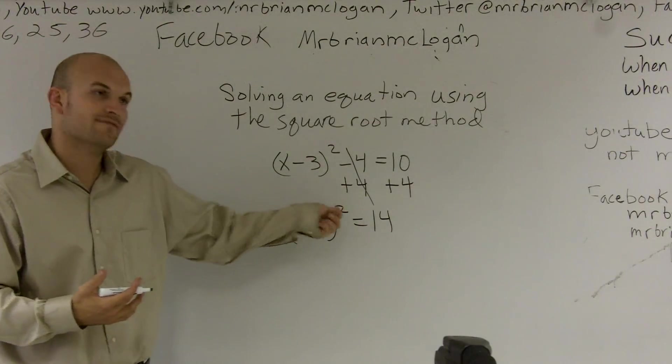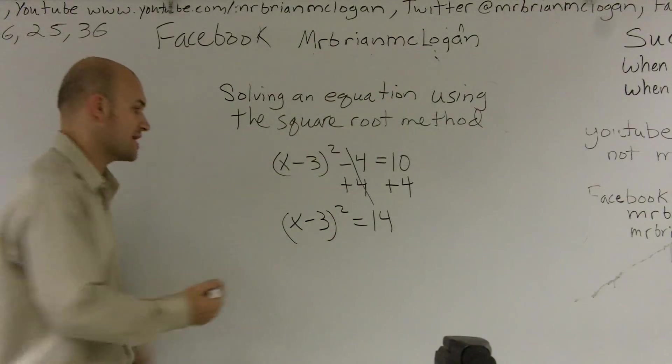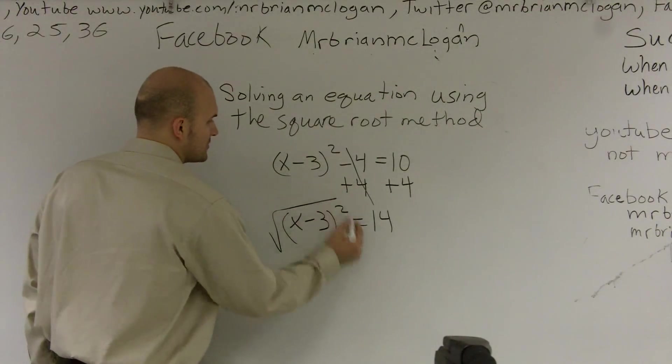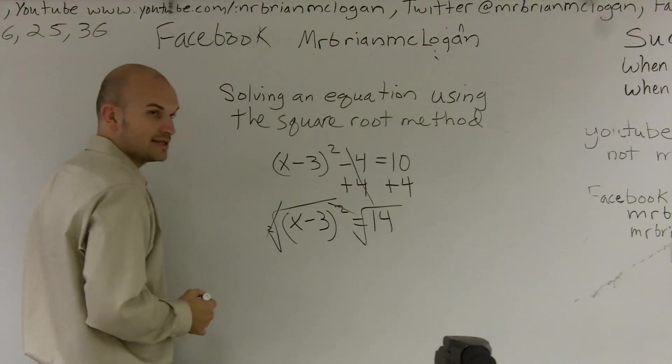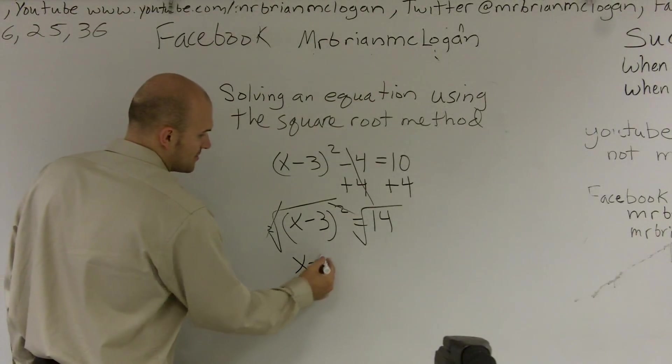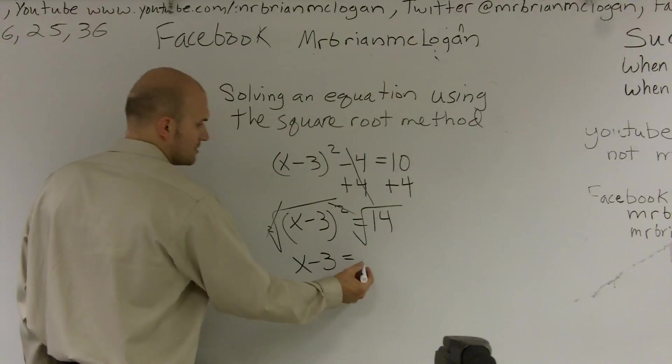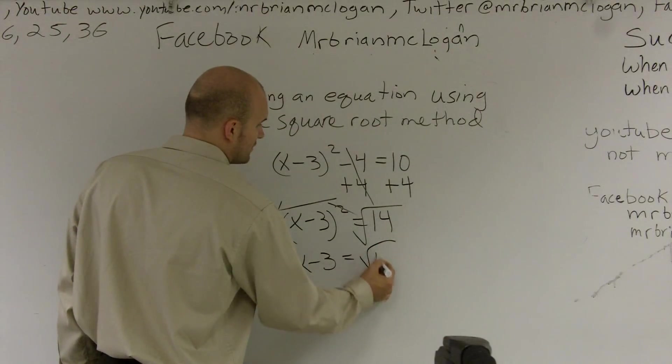Now I can do the inverse operation of the square. So the inverse operation of the square is the square root. And so what happens is these are going to cancel out. So I'll be left with x minus 3 equals square root of 14.